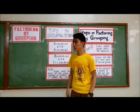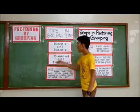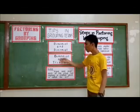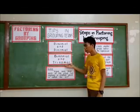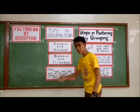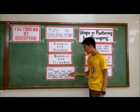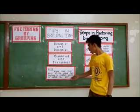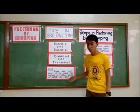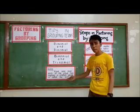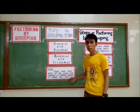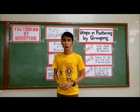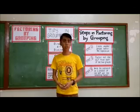In grouping terms, it could be a binomial and a binomial, or a binomial and a trinomial. But take note: make sure that each of the groups has something in common, which is called the greatest common factor, or the GCF. Since we already know how to group terms, now it is time to know further about the steps in factoring by grouping.